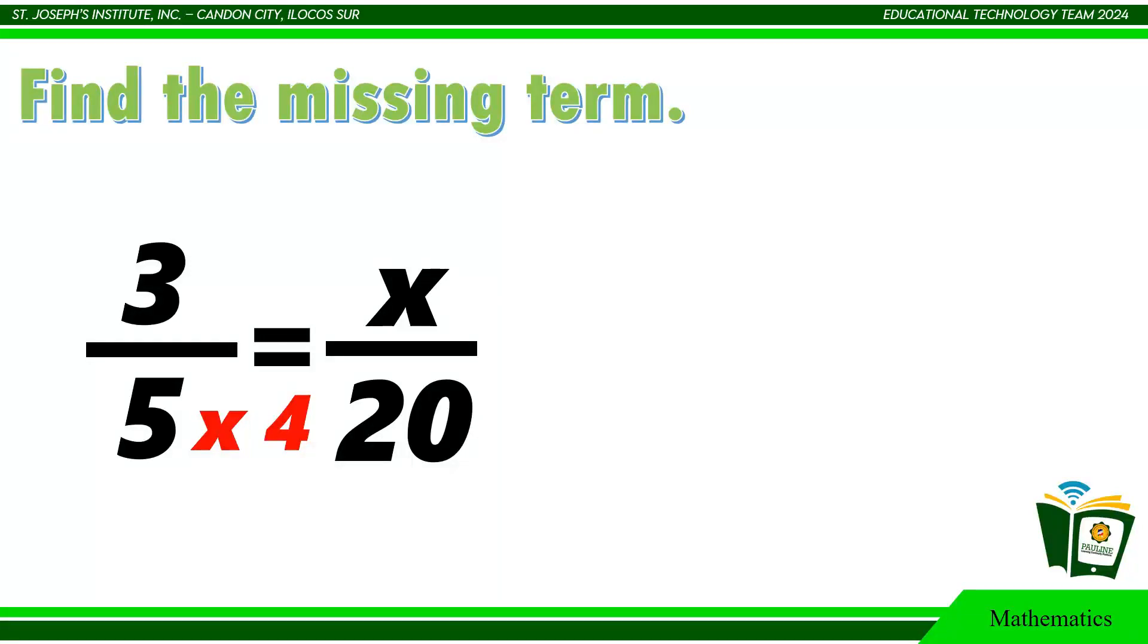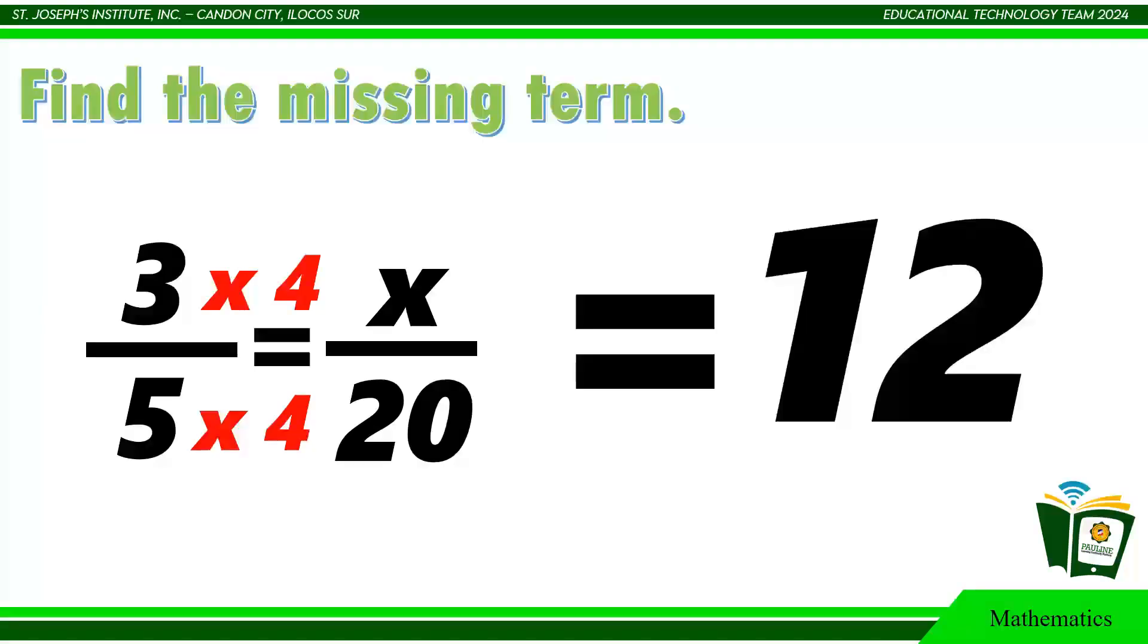So, if you multiply by 4 in the denominator, multiply also by 4 in the numerator. So, 3 times 4 equals 12. The value of x is 12.